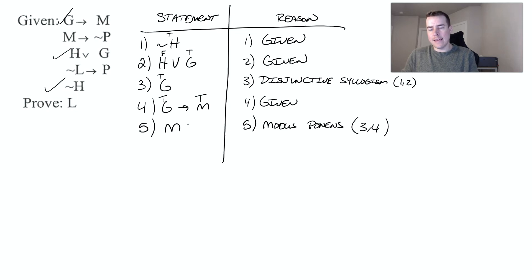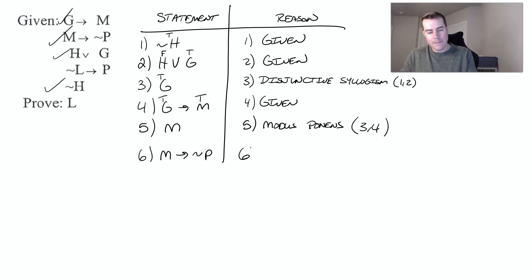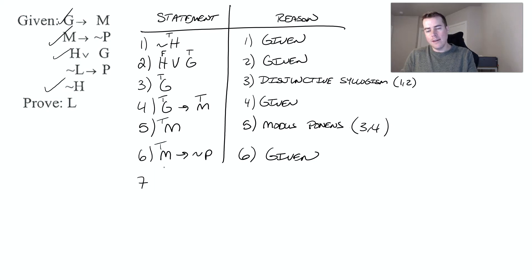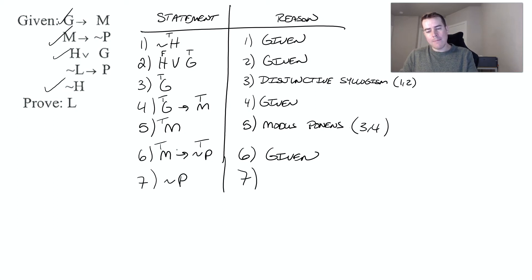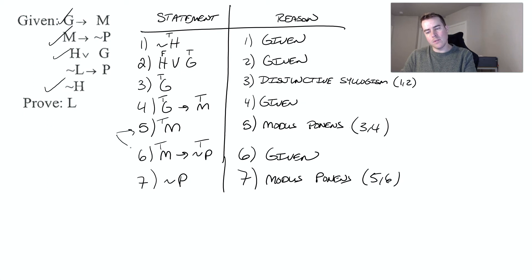Now let's look for something else with M. I see line two has M implies not P — that was given. Since M is true, for this conditional to be true, not P must also be true. We just detached not P there, so that's modus ponens again. We got that from lines five and six.